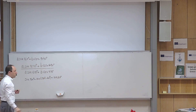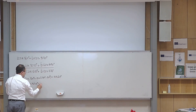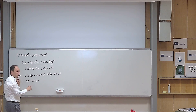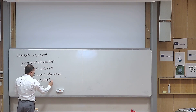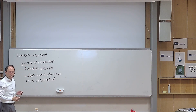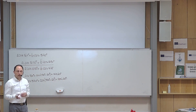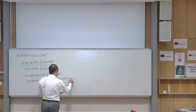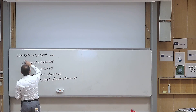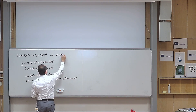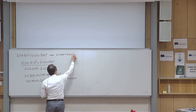Instead of working with 160 degrees, I can work with 20 degrees. What about cosine? Cosine of 340 degrees can be viewed as cosine of 360 degrees minus 20 degrees. The period of cosine is 360 degrees, so I can eliminate that, and it becomes cosine of minus 20 degrees. Cosine of a negative angle equals cosine of the positive angle, so this becomes cosine of 20 degrees. So I can rewrite the given assumption entirely in terms of 20 degrees.